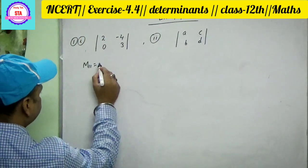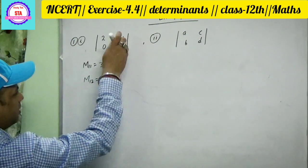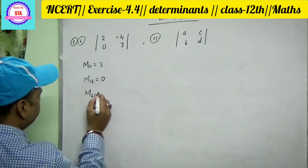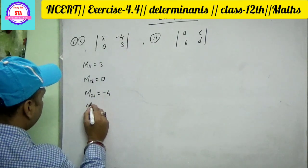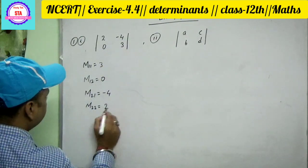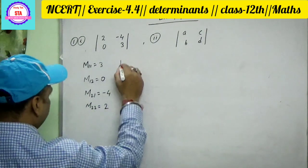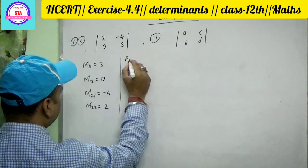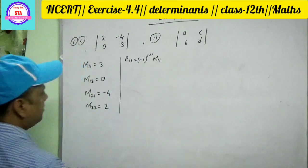That is: remove the first row and second column — that gives us a certain value. Then M21: remove the second row and first column to get minus four. Then M22: remove the second row and second column. Now, if you want to change the sign using the formula, that is called the cofactor. A11 is equal to minus one raised to the power 1 plus 1, times M11.